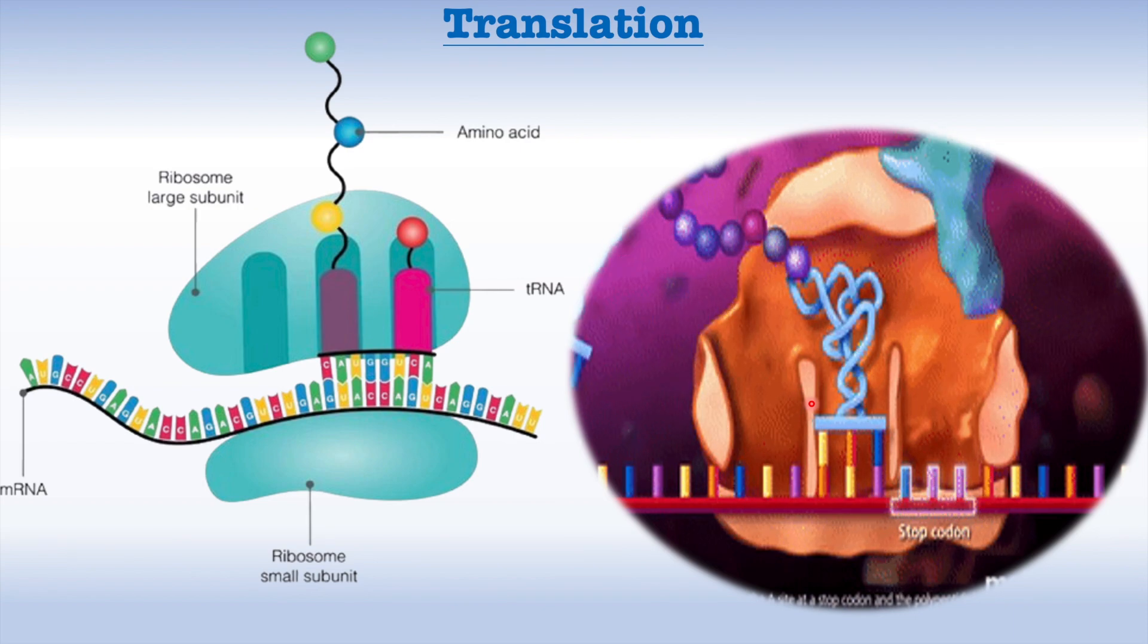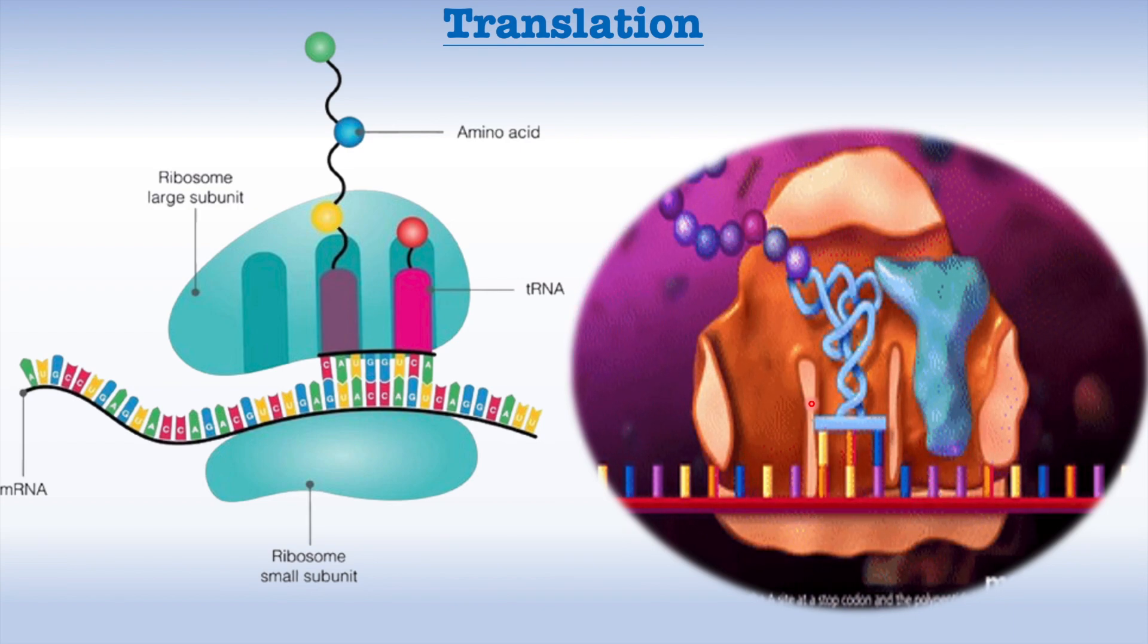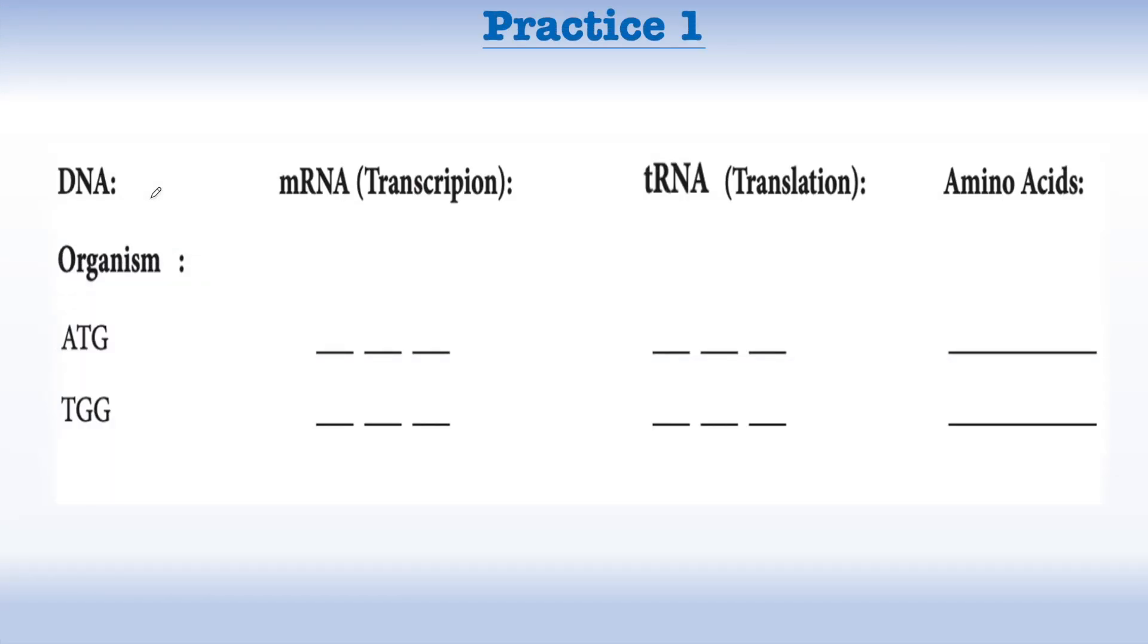Let's start. As you see here, we have the codons on DNA that we need to do the transcription for them, then translation, then we'll bring the right amino acid. The first codon, which is ATG: now on messenger RNA, A should pair with thymine, but on RNA we have instead of that, uracil, so it will be U. T with A, G with C.